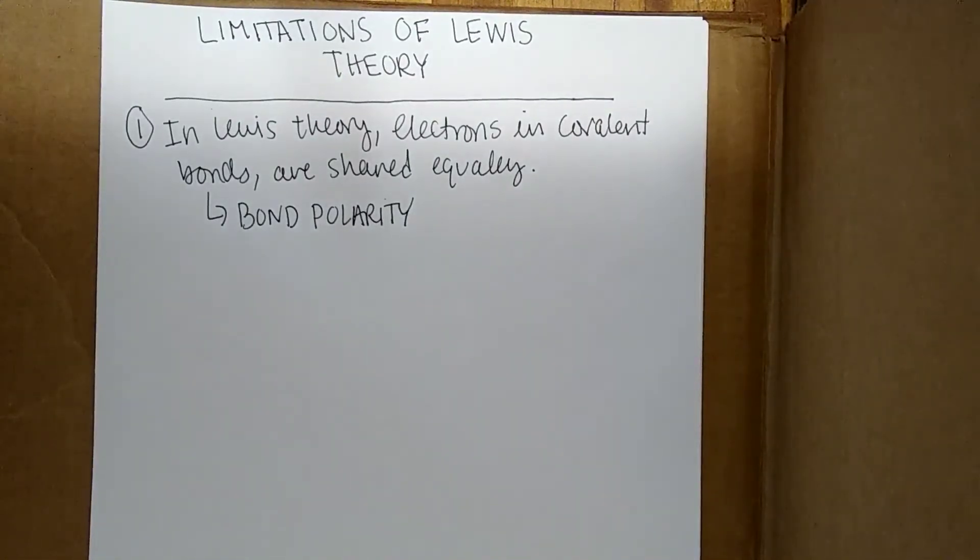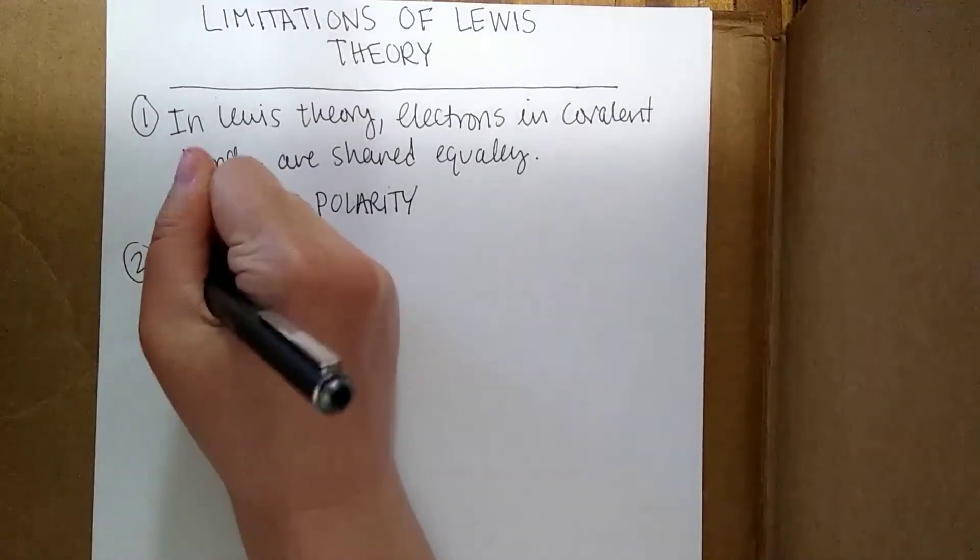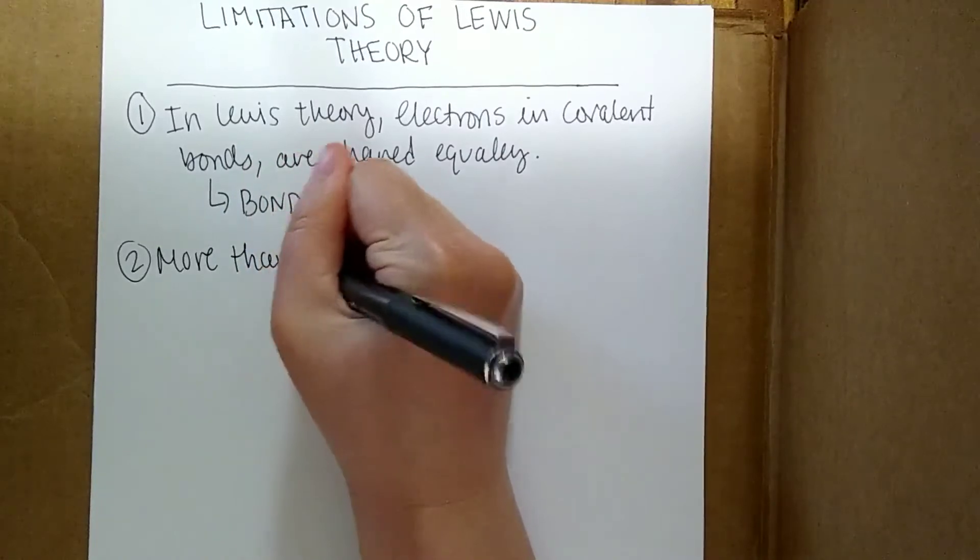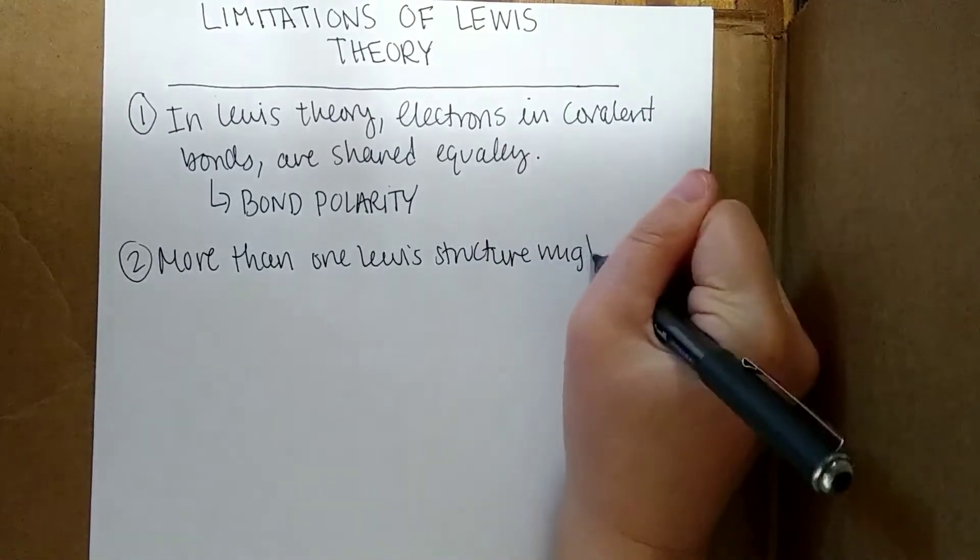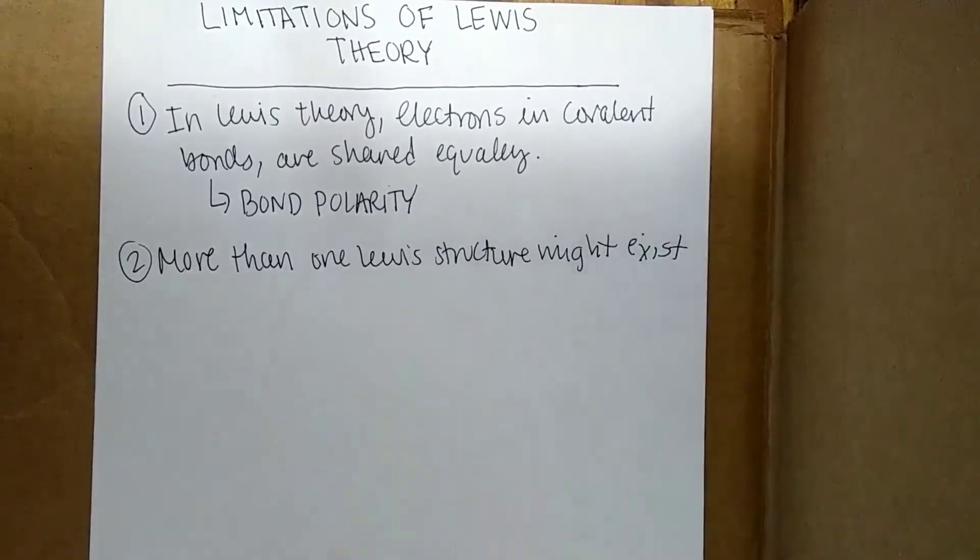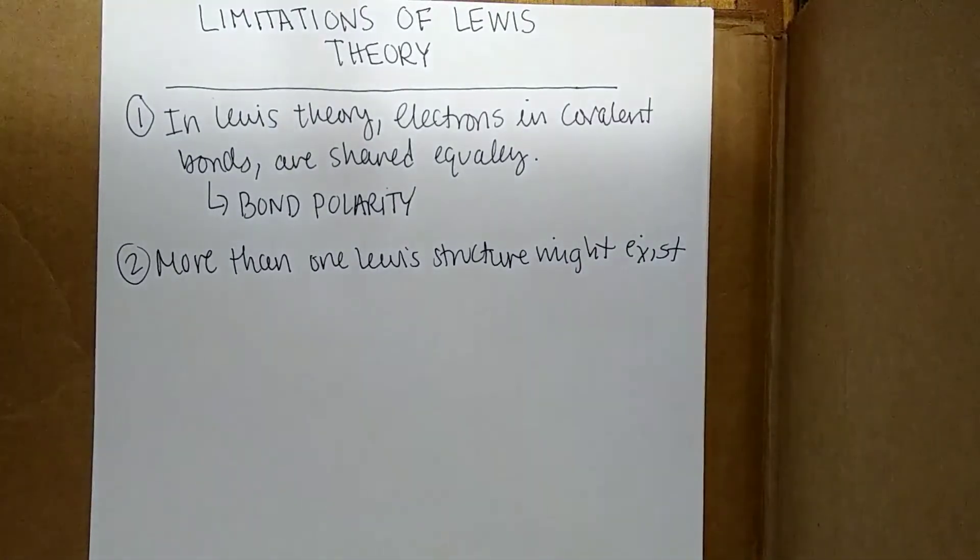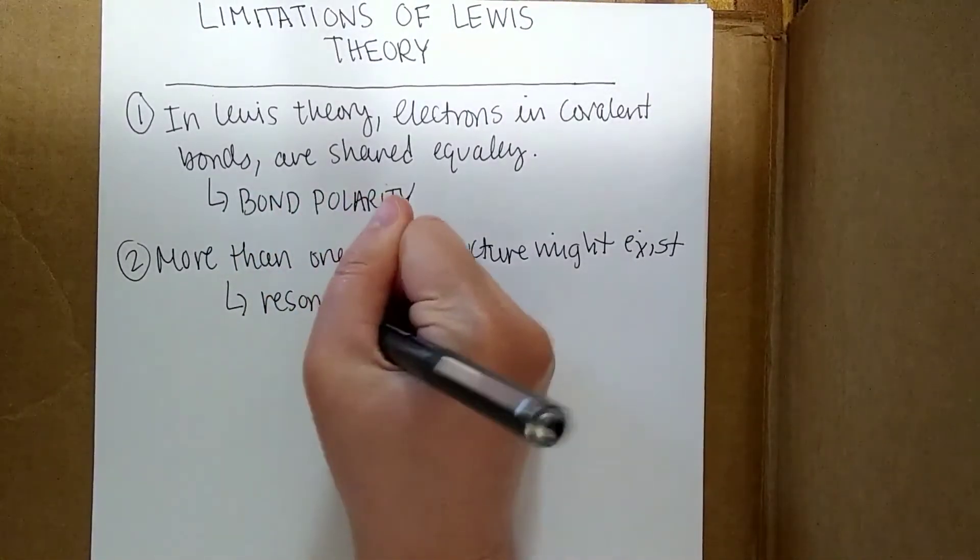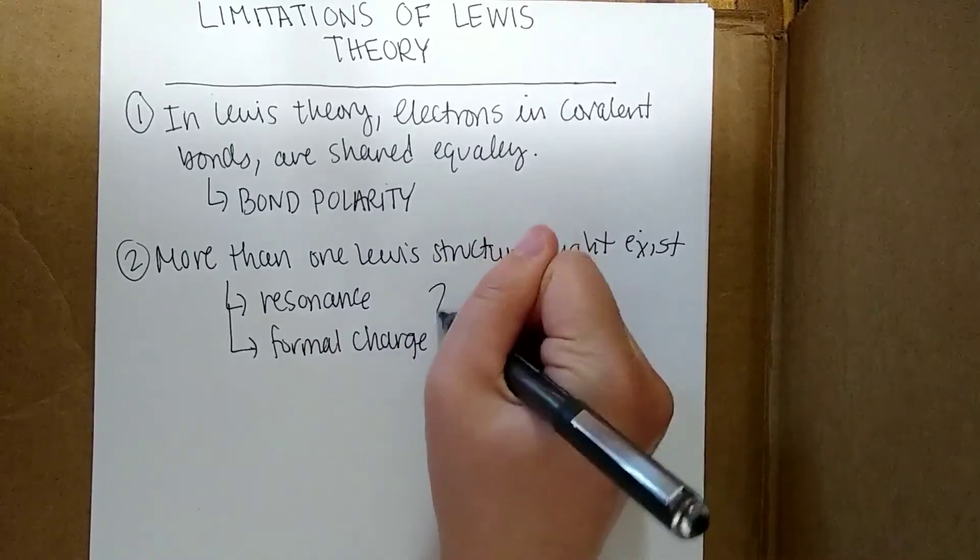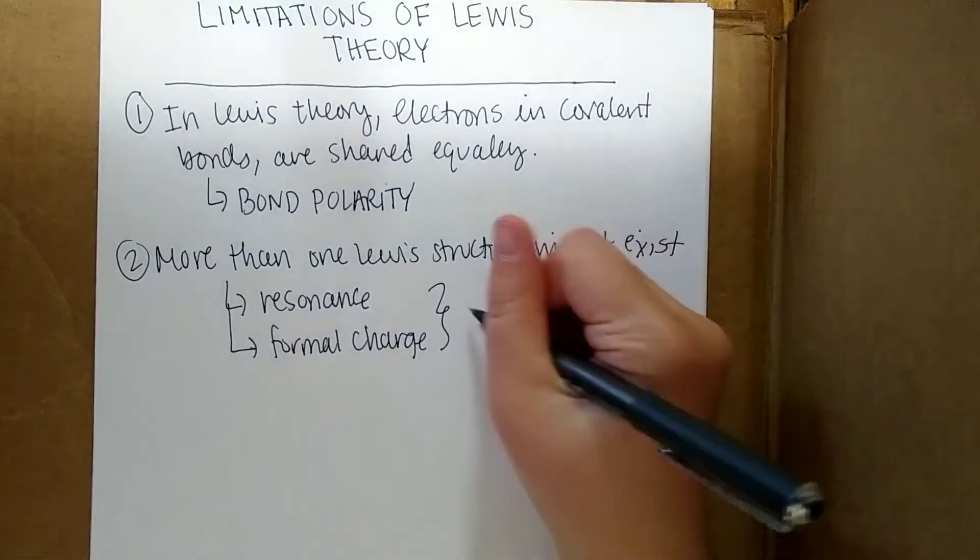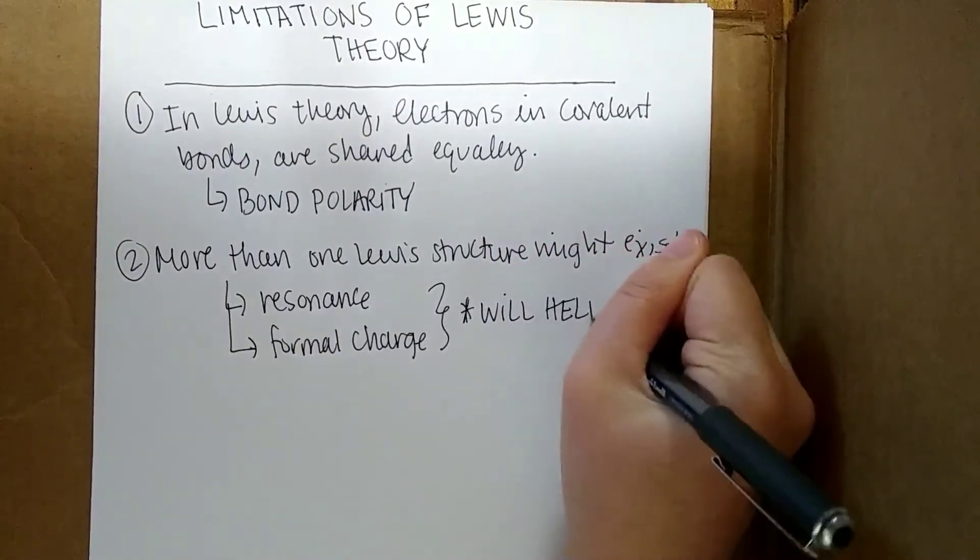Another limitation is that sometimes you can draw more than one Lewis structure that's valid. And you need to come up with a way to figure out what the correct Lewis structure is, or to gain a more nuanced understanding of what the real molecule looks like. So there are a couple additions to Lewis theory that we're going to talk about in other lectures. One thing is known as resonance, and another is known as formal charge. This is going to help us overcome this limitation, and we're going to learn a little more about it in the next lecture.